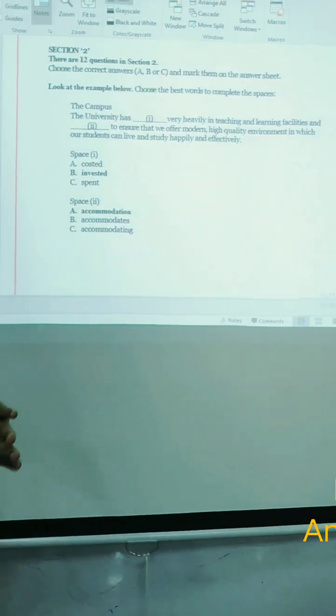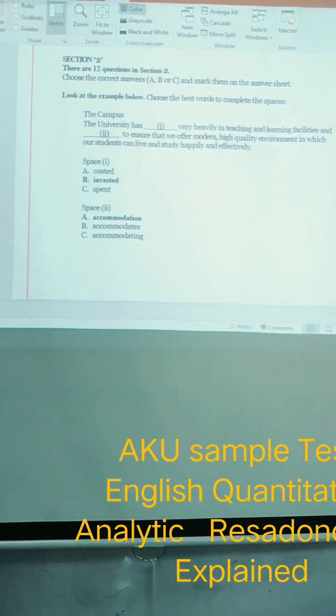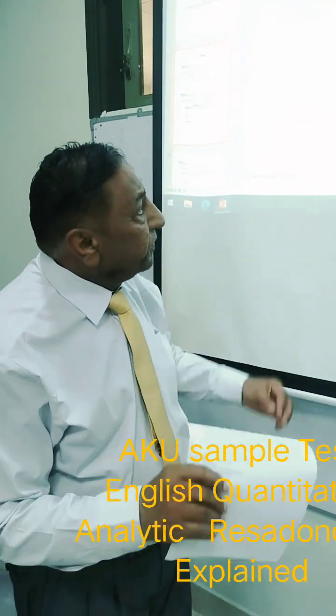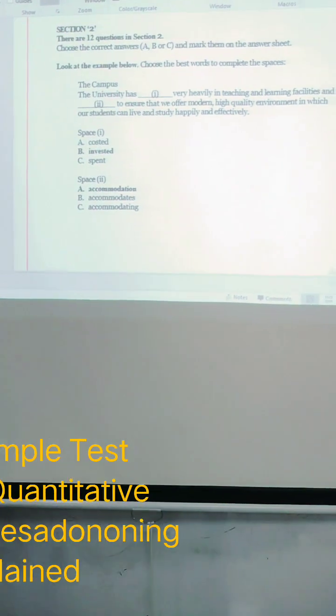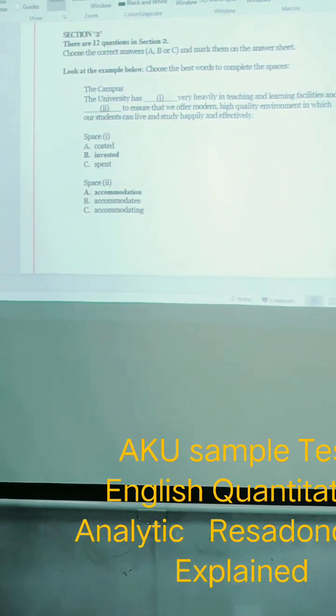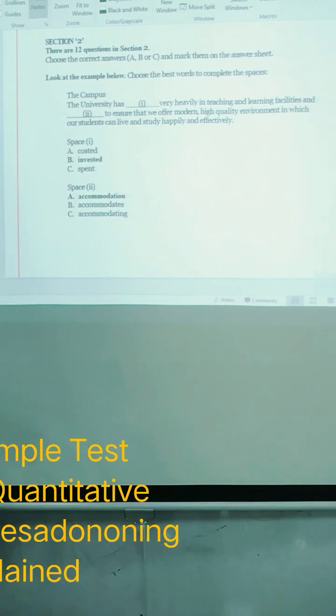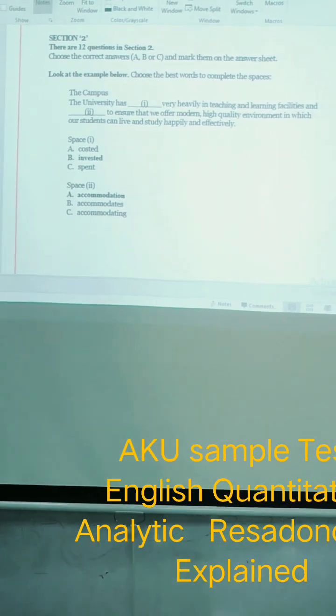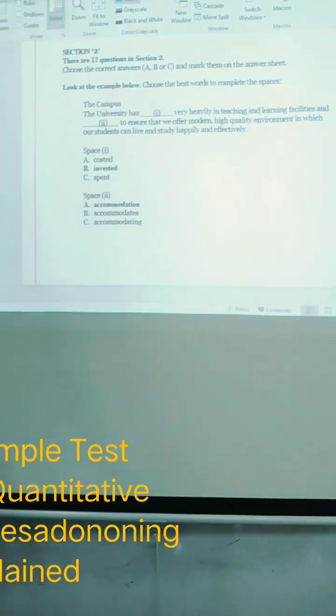It is invested. The university has invested very heavily. So invested is the correct fill in the blank. In the second space, it is accommodation which is the best place and that will say facilities and accommodation to ensure that we offer modern high quality environment.